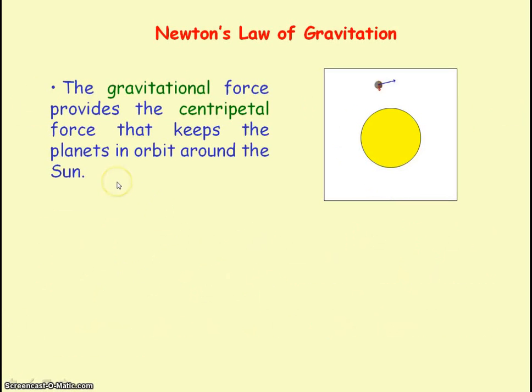The sun exerts a gravitational force on the planets that make them orbit around the sun. If we assume that the orbit is circular, then we can say the gravitational force is providing the centripetal force.